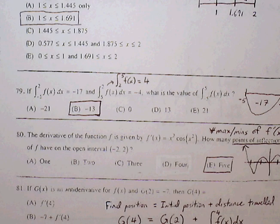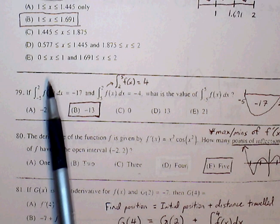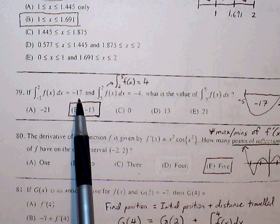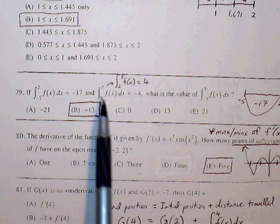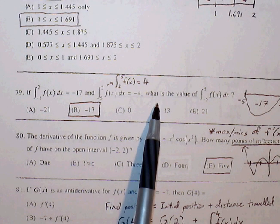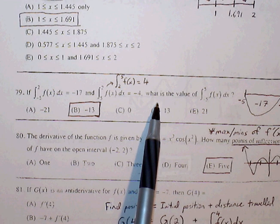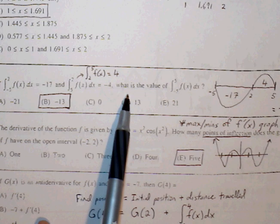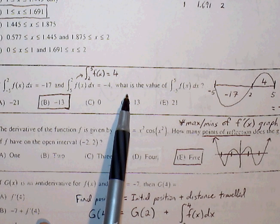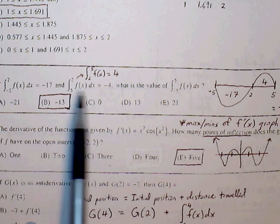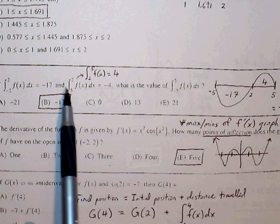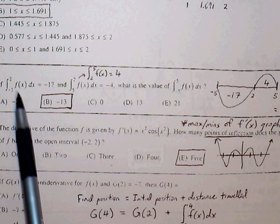Okay, 79. The definite integral from negative 5 to 2 is equal to negative 17, and the definite integral from 5 to 2 is equal to negative 4. What is the value of the definite integral from negative 5 to 5? So we can sketch a graph to kind of demonstrate or give a visual as to what the graph may look like. So from negative 5 to 2, we expect the graph to have negative displacement.